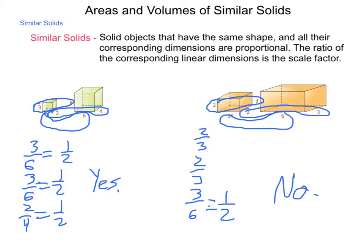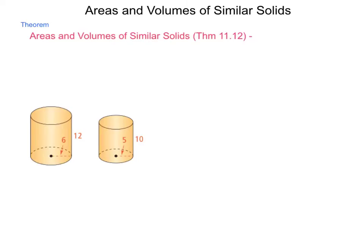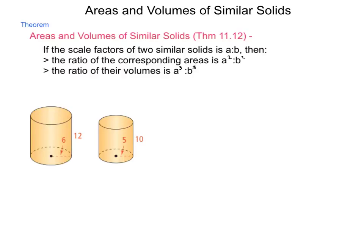One of them is disproportionately larger in a dimension than the others would be. So once we know that we have similar solids, what can we do with them? The ideas that we had with objects back when we were talking about two-dimensional, talking about perimeter or circumference to area, we can apply a theorem to areas and volumes of similar solids. Theorem 11.12 tells us, if the scale factors of two similar solids is A to B, then first, the ratio of their corresponding areas is A squared to B squared, and second, the ratio of their volumes is A cubed to B cubed.